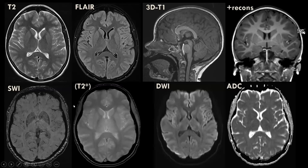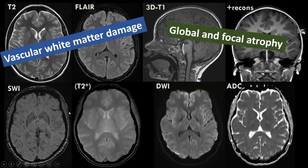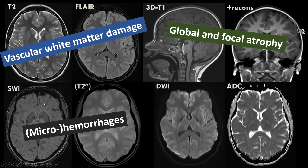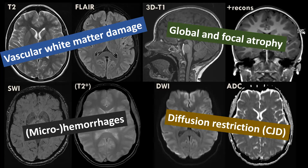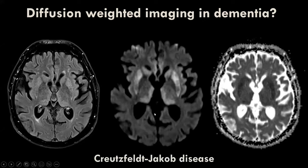T2 and FLAIR are mainly used to evaluate vascular white matter damage. 3D T1-weighted images assess global and focal atrophy. Susceptibility-weighted or T2-star images detect microbleeds. Diffusion-weighted images detect areas of diffusion restriction — especially important in patients suspected of having Creutzfeldt-Jakob disease. This patient with CJD shows subtle signal increase in the basal ganglia and thalamus on FLAIR, with corresponding diffusion restriction on DWI and low signal on ADC map. Another CJD patient shows mainly cortical involvement.